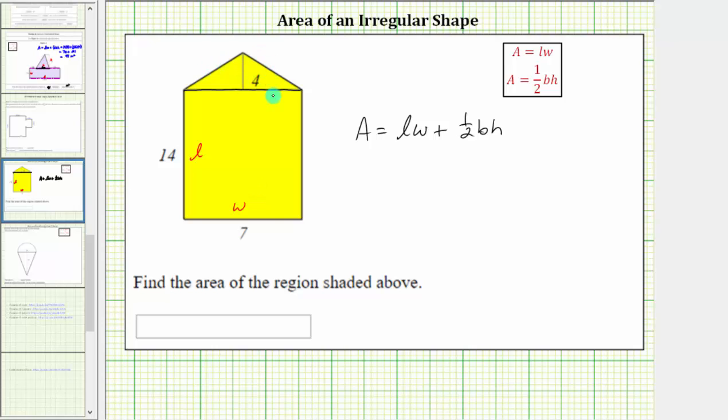Now looking at the triangle, the base would be the same length as the opposite side, which is 7 units. So the base of the triangle is 7 units, and the height is 4 units.